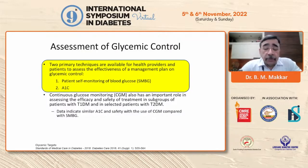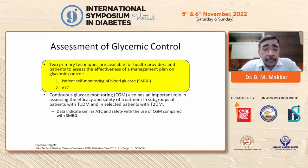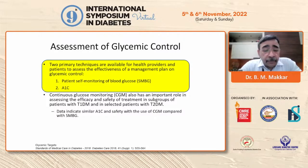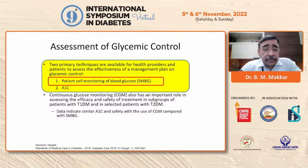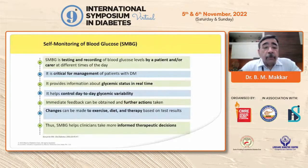The two primary techniques commonly used in clinical practice are patient self-monitoring of blood glucose and A1C. Guidelines have started recommending CGM as an important tool, particularly for assessing efficacy and safety of treatment in type 1 diabetes and selected type 2 patients treated with insulin. My focus in this presentation is self-monitoring of blood glucose — defined as testing and recording blood glucose levels by the patient and/or carer at different times of the day.